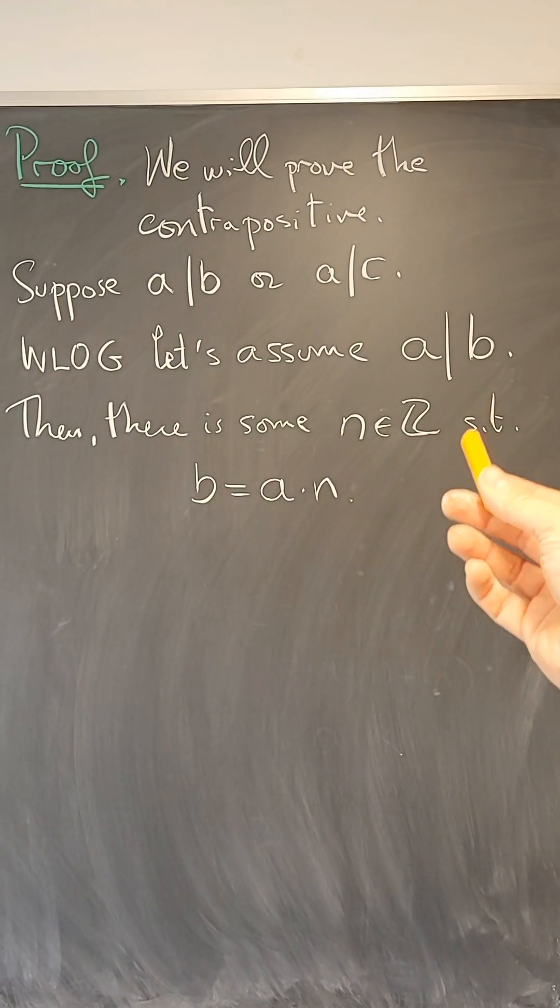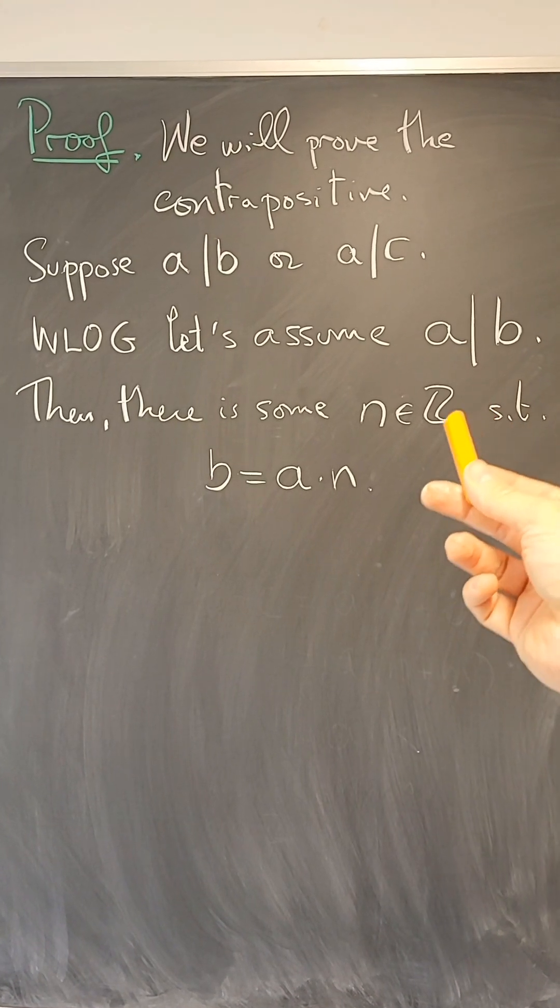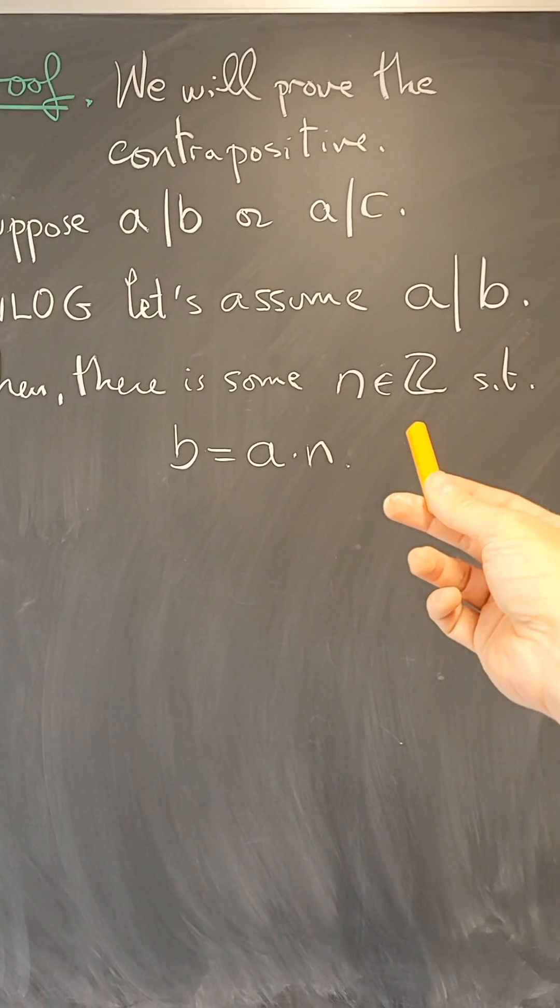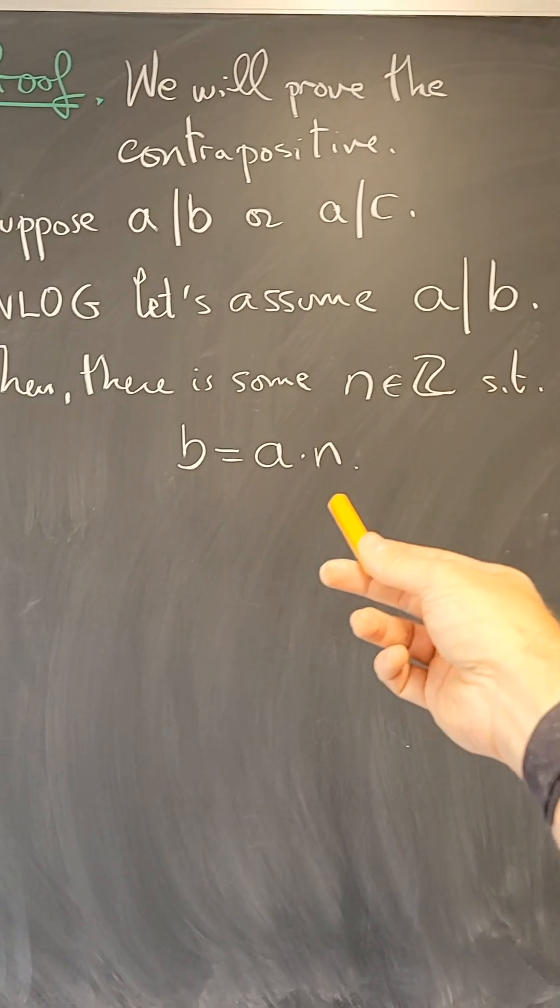By the definition of divisibility, that means there is an integer N such that B equals A times N.